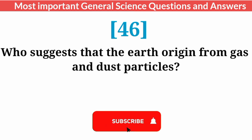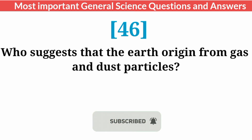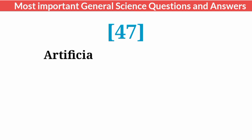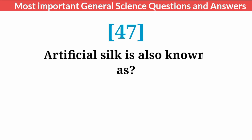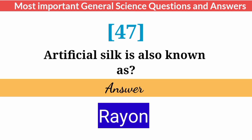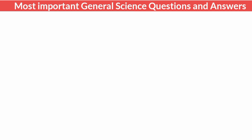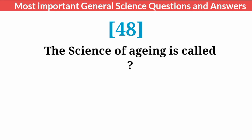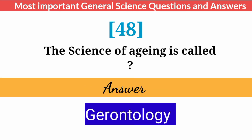Who suggested that the earth originated from gas and dust particles? Answer: Kant. Artificial silk is also known as? The science of aging is called? Answer: Gerontology.